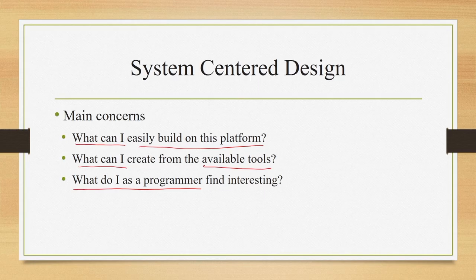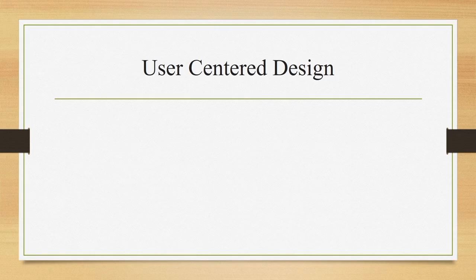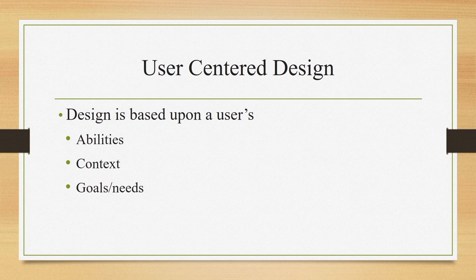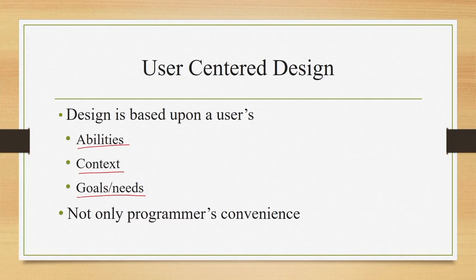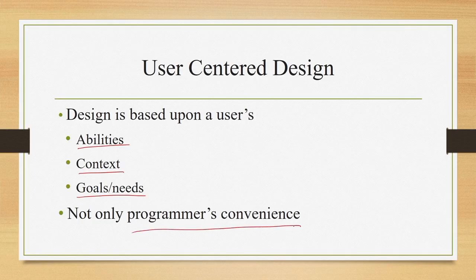In system-centered design, the developer asks: what can I create from available tools, rather than catering to user needs? What do I find interesting as a programmer, rather than what will help the users? Essentially the concern is about the developer's own expertise, skill, and interest rather than the users' needs. In contrast to this, in user-centered design, the design is based on the user's abilities, context, goals, or needs — what the user is capable of doing, what their goals are, and what the usage context is.